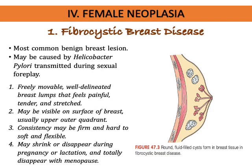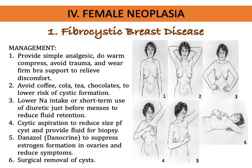Fibrocystic breast disease is the most common benign breast lesion. It can occur as early as puberty but is more common from late adolescence up to 45 years old. Symptoms include freely movable and well-delineated breast lumps that feel painful, tender, and stretched especially on palpation. They may be visible on the surface and are usually palpated in the upper outer quadrants. Consistency may be firm and hard or sometimes soft and flexible, and they may shrink or disappear during pregnancy, lactation, or at menopause.